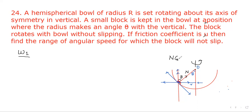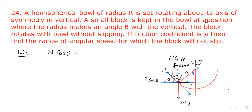N cos θ acts in the upward direction and weight mg acts downward. Friction acts in the upward direction. Its component along the vertical: since the angle between friction and the vertical is (90° − θ), the vertical component is friction sin θ and the horizontal component is f cos θ. Since there is no vertical motion, N cos θ + friction sin θ = mg.